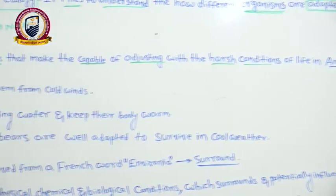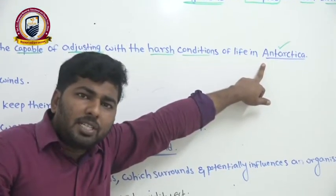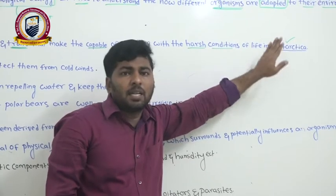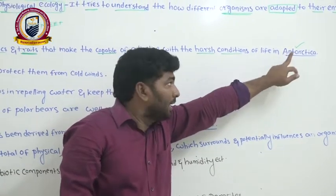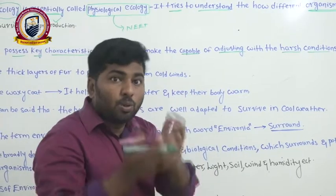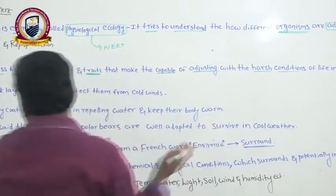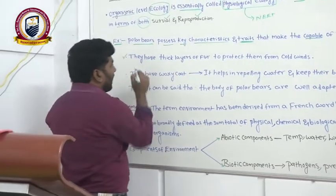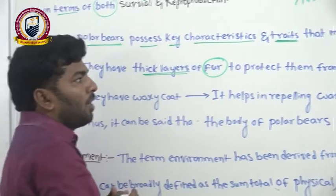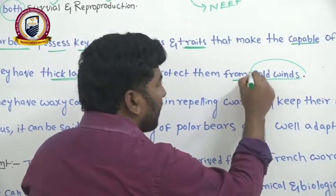We know that polar bears are mainly found in Antarctica regions, where we observe permafrost soils — soil which is covered with ice. Those polar bears have special characters that help them survive in those conditions. The first character: they have thick layers of fur, which protects them from cold winds. Because they are present in Antarctica, which is completely ice-covered, they need a thick layer of skin and fur.